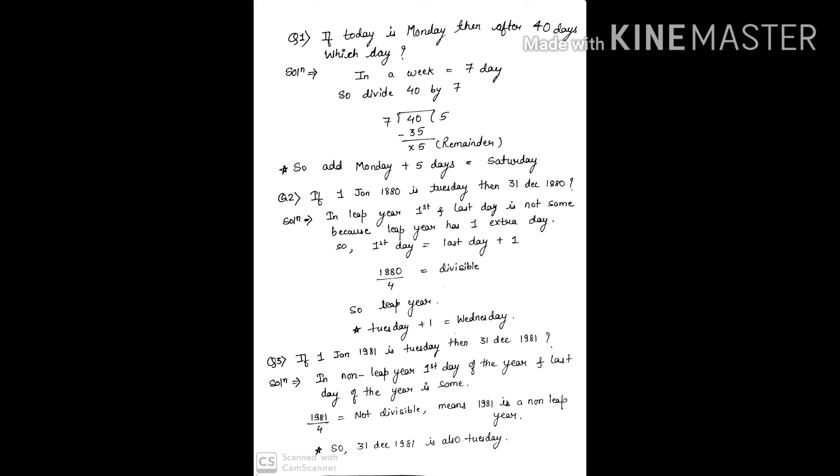Now in our second question, if first Jan 1880 is Tuesday then 31st December 1880 will be which day? Friends, we should learn this concept that in a leap year, first day and last day is not same because leap year has one extra day.